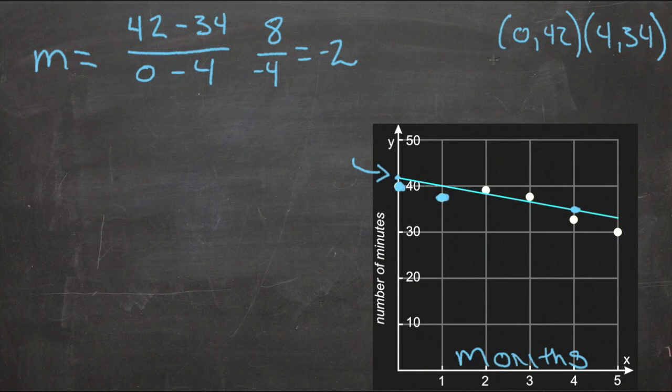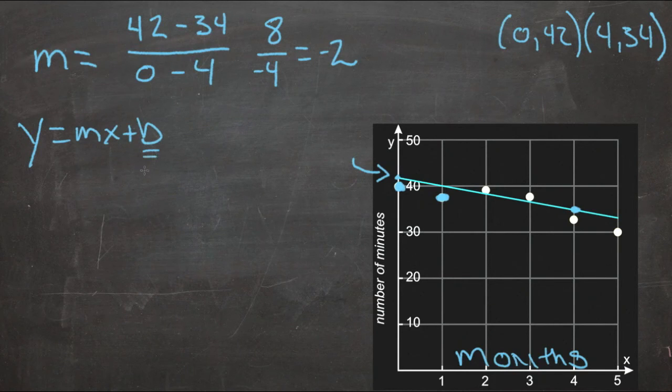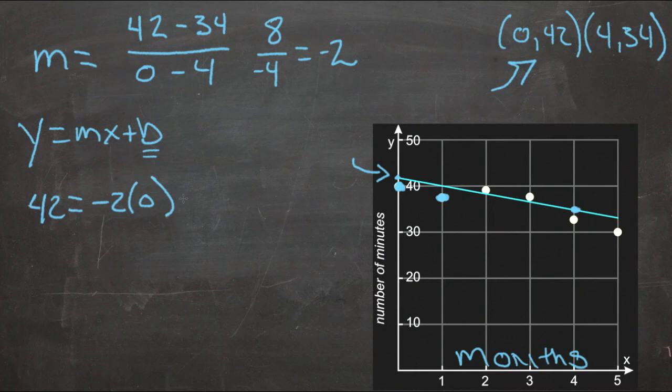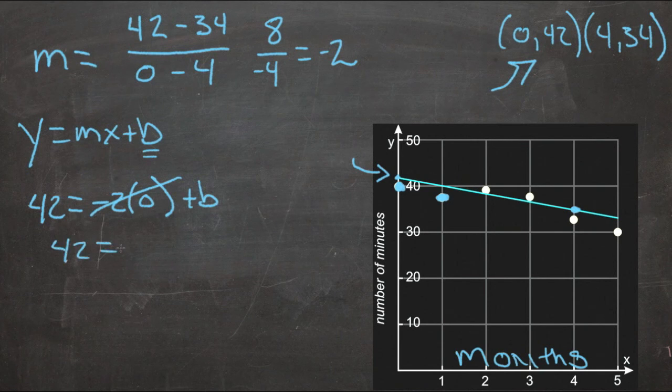So now we have an x and a y and an m, but we don't have a b. If our form is y equals mx plus b, we still need to find that b. So let's plug in the other values we have and solve for b. Using the first point here, we'll have 42 equals negative 2, that's our m, times 0 plus b. Now that's convenient because negative 2 times 0 is 0, so this is just going to go away, and we get 42 equals b.